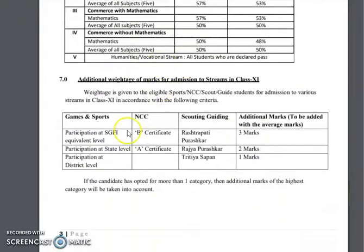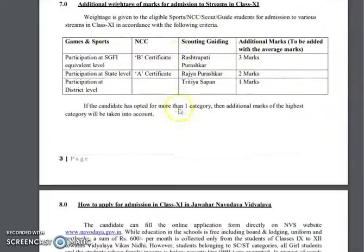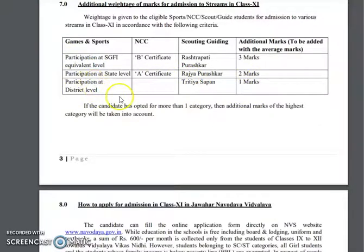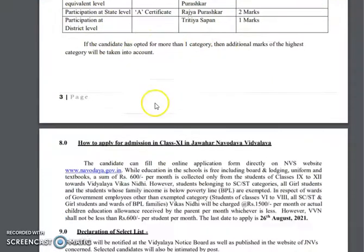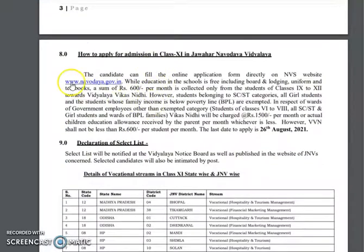In the selection process, if you have NCC or games and sports certificates, you will get extra bonus points. For NCC: B certificate gives 3 marks, state-level A certificate gives 2 marks, and district-level participation in games and sports gives 1 mark.